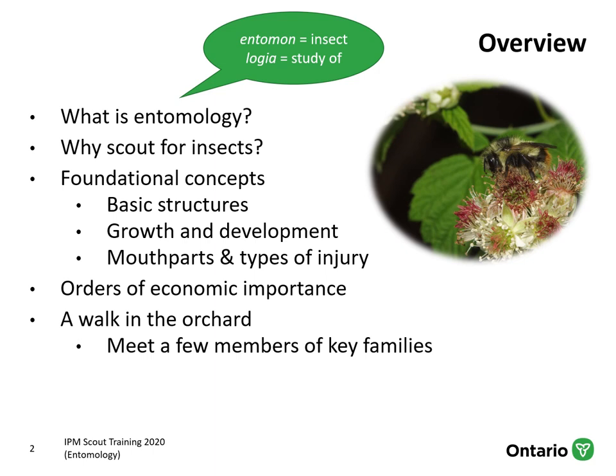Today's presentation is intended to provide a basic overview of some important concepts about entomology to help prepare you for upcoming crop-specific sessions. We'll be covering some really basic information like why scout for insects in the first place, what information can we relay to growers through scouting. We're going to cover foundational concepts like basic structures, growth and development, mouth parts and types of injury, a few orders of economic importance in agriculture, and we'll end with a walk in the orchard.